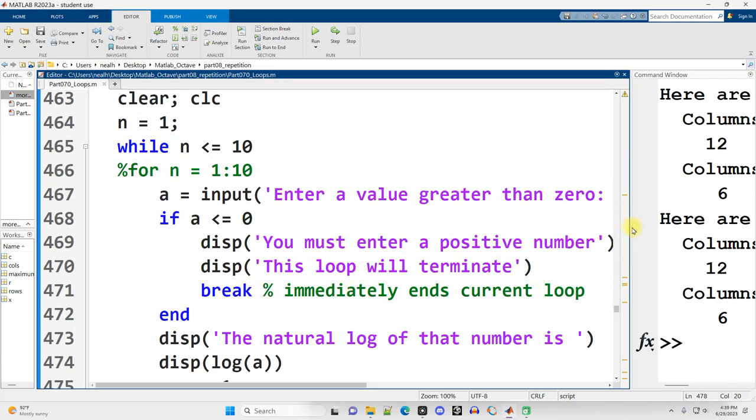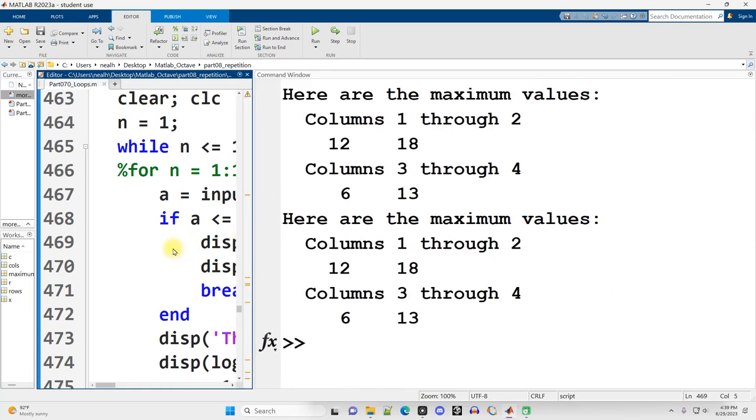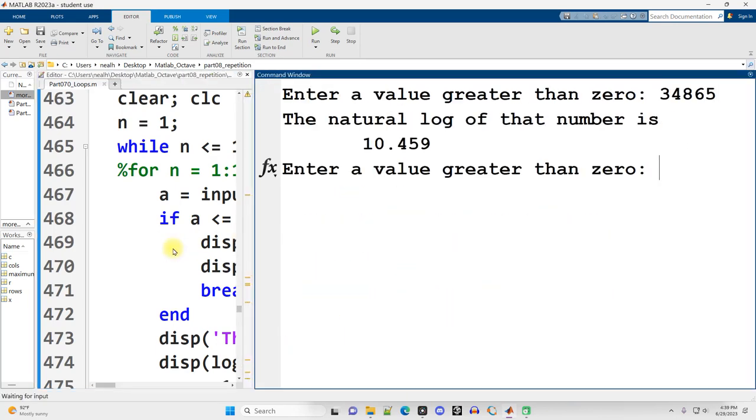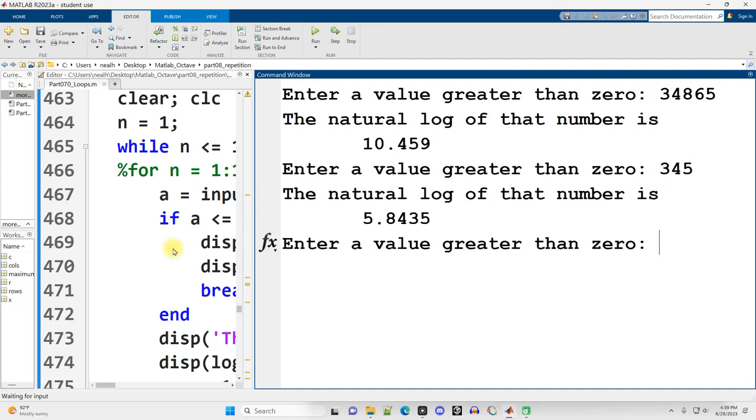All right, and we'll dive back into the code here in a second, but let's run it and see what happens. Enter a value greater than 0. Great, there you go. And it takes the natural log of that, and then I do it again. Great.